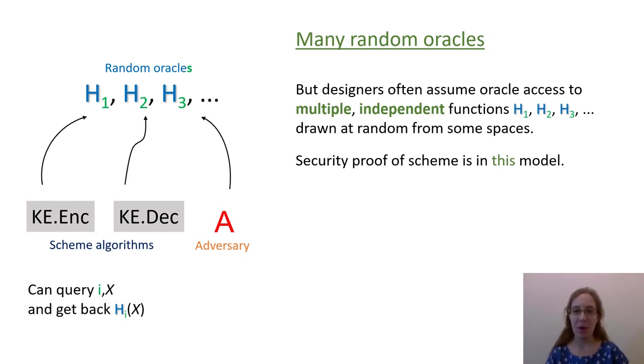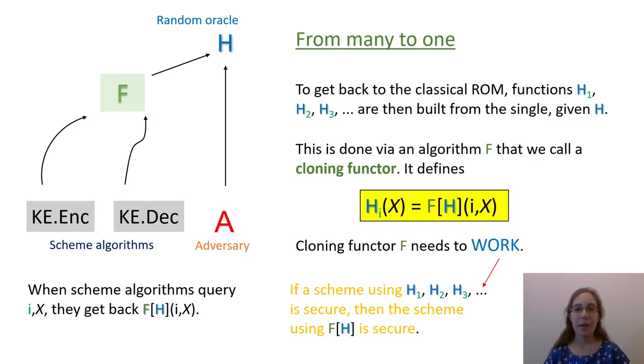In the design of schemes, however, it is often convenient to assume access to multiple independent random oracles. Parties can query an index i and a string x and get back H_i of x, the result of the i-th random oracle on input x. The proof of security would be in this setting, meaning it would assume the different random oracles are independently random. In the end, however, we want to be back in the setting with a single RO, so that our implementation can use just one cryptographic hash function. So we get the problem of going from many random oracles to one.